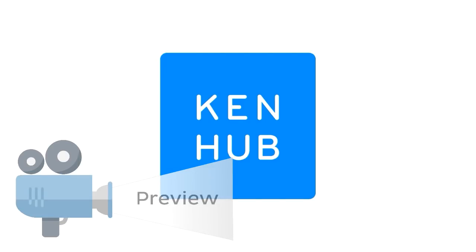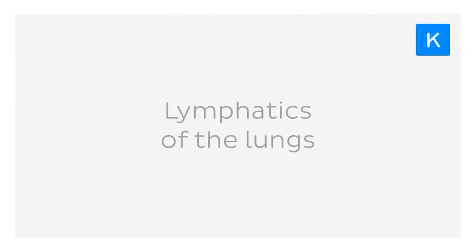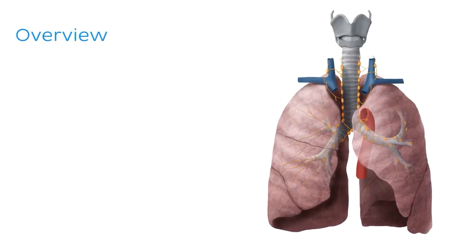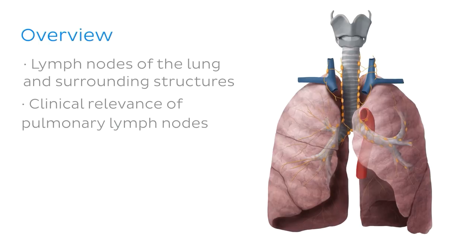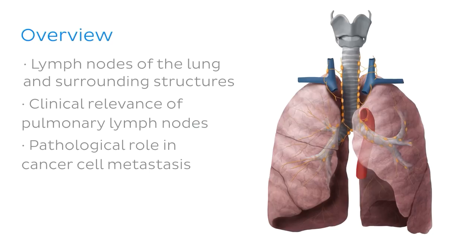Hello everyone, my name is João and welcome to another anatomy tutorial here at CanHub. Today we're going to be talking about the lymphatics of the lungs. In today's tutorial, we're going to look at the lymph nodes of the lung and surrounding structures. Once we've learned about the lymphatics of the lung, we're going to take a look at the clinical relevance of the pulmonary lymph nodes and their pathological role in cancer cell metastasis. We will be using this helpful diagram throughout today's tutorial, so let's briefly talk about what we're looking at.